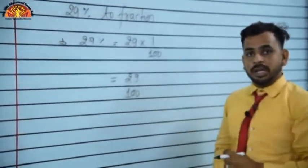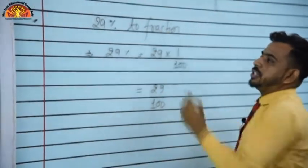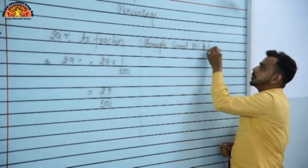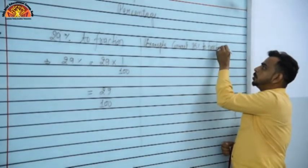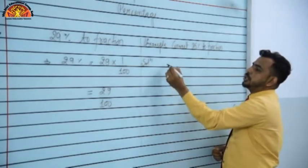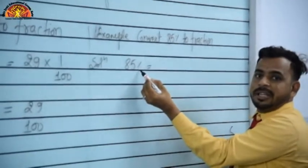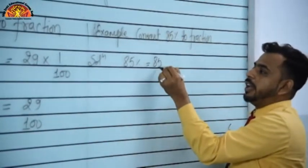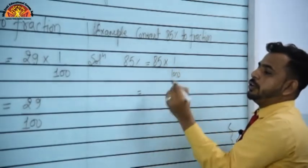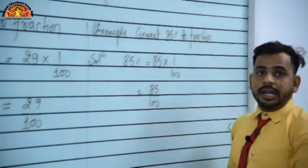Another example: 85% to fraction. 85% → remove the percentage sign → 85 × 1/100 = 85/100.